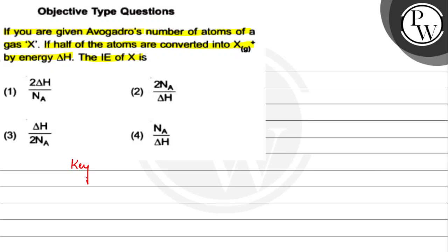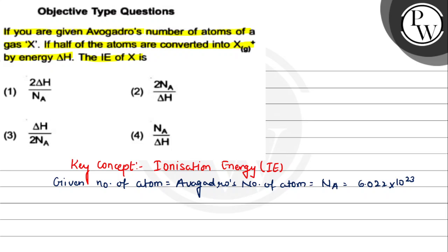The key concept is ionization energy. Given number of atoms is Avogadro's number, Na, which equals 6.022 times 10 to the power 23.